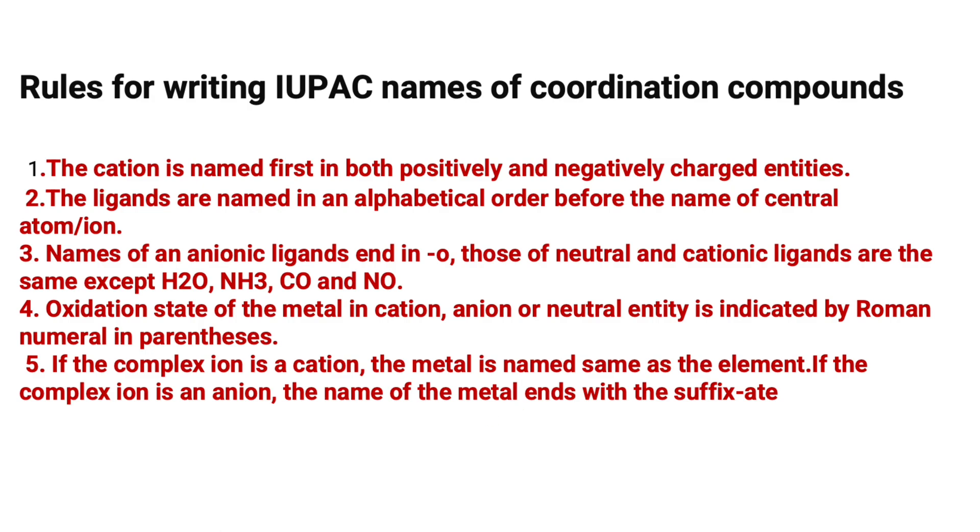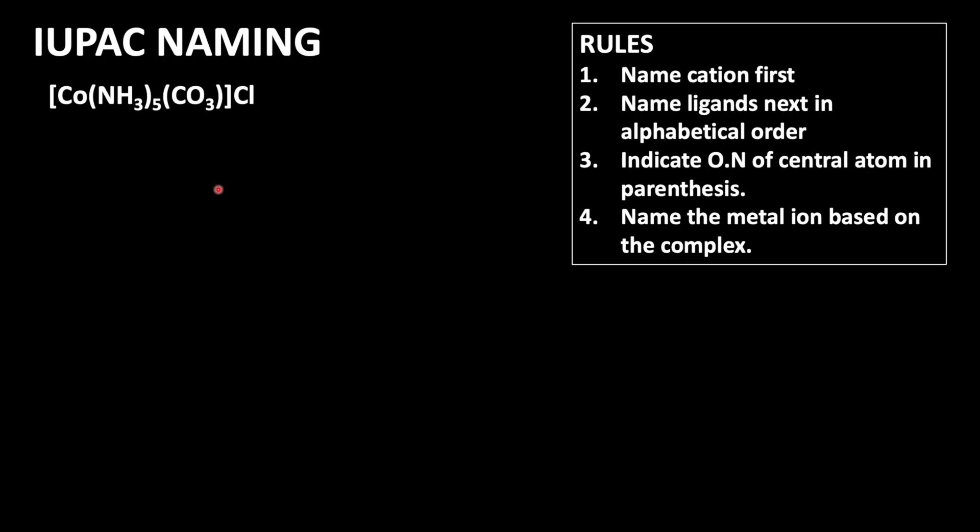Now we move to the question: [Co(NH3)5(CO3)]Cl. Here the counter ion is an anion, so we can start by naming the ligands in alphabetical order. We have two types of ligands: one is amine, five amine groups are present, then carbonate, which is an anionic ligand. The central ion is cobalt.